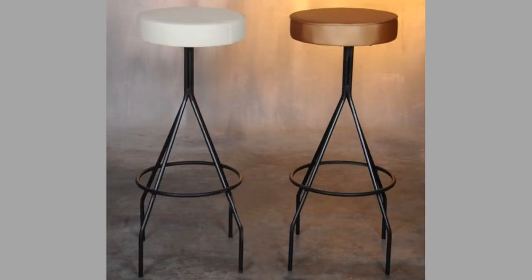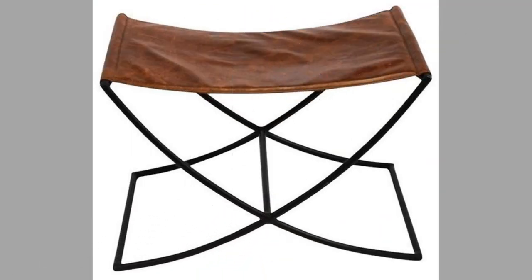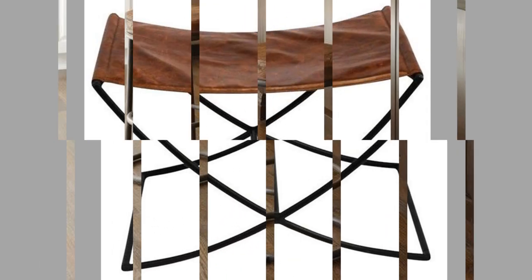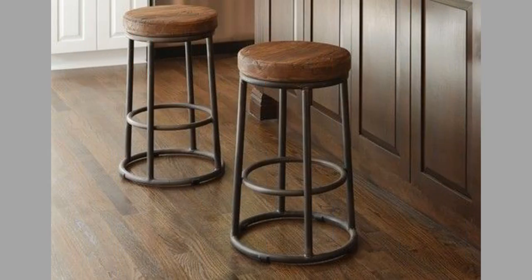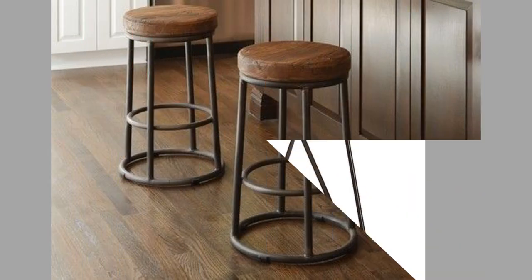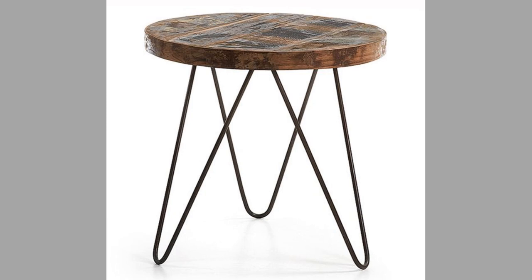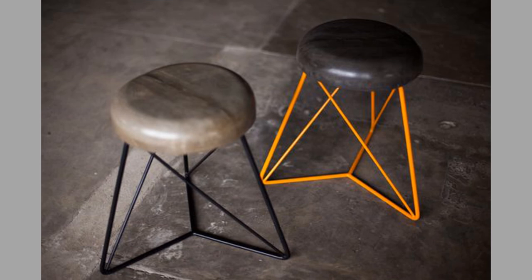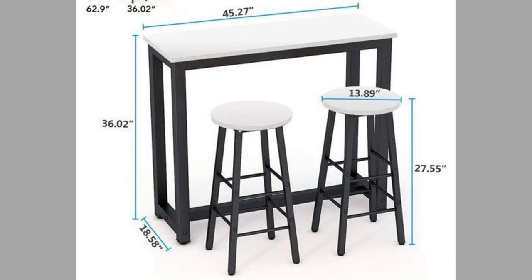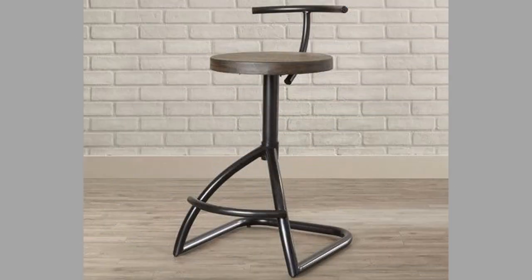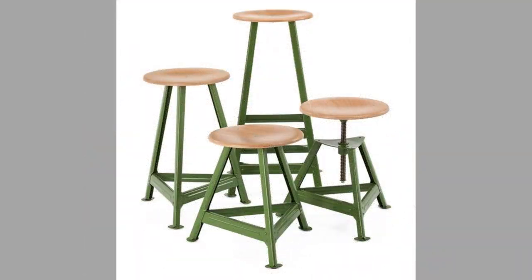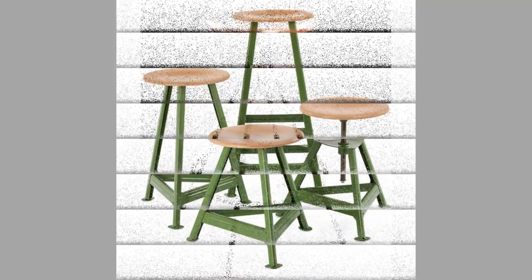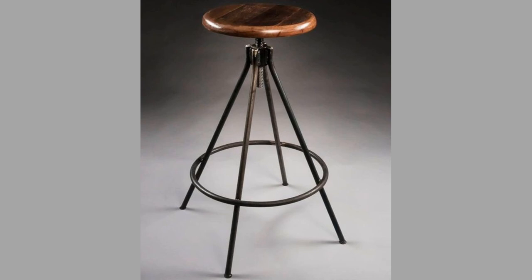The normal seat height for a bar stool is 30 inches or 76 cm, with 26-inch or 66 cm stools being used against kitchen counters. Extra tall 36-inch or 91 cm stools are increasingly used in contemporary styles with high-top tables to create a visual effect in modern interiors. Counter height bar stools have a seat height of 24 inches or 61 cm, compared to a conventional dining chair seat height of 18 inches or 46 cm.